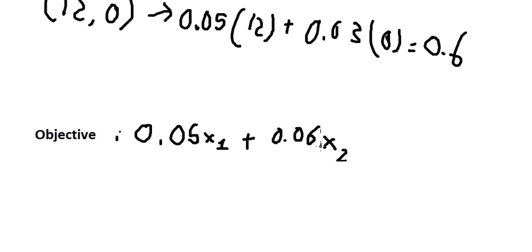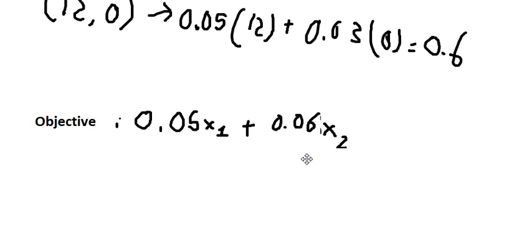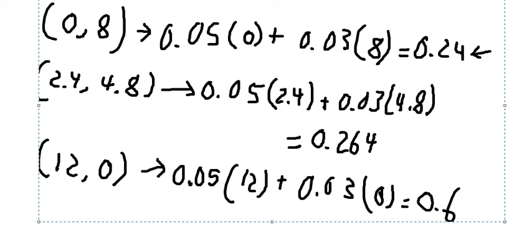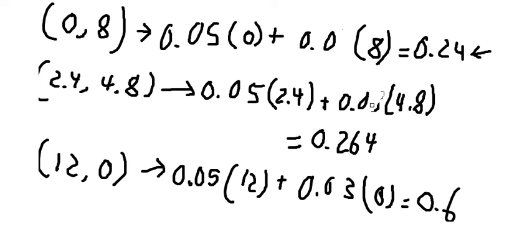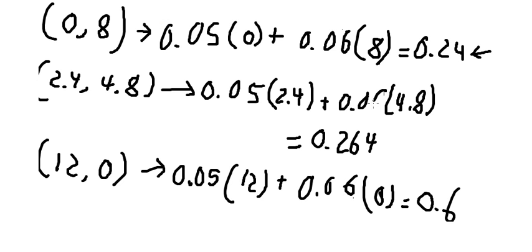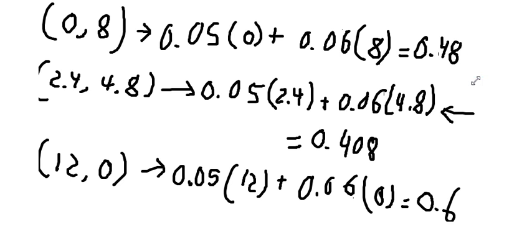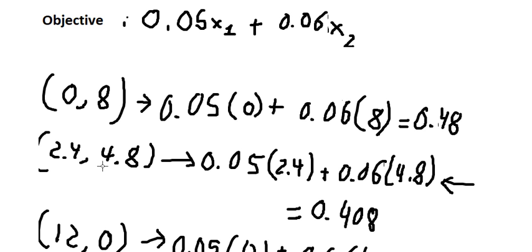Now for the next part — if the price increases from 0.3 to 0.6, what will happen? We use the same technique but just change the value in the calculation. After recalculating with the new price, we get 48 for one point and 408 for another. We need to select the minimum, so the answer is still s1 equals 2.4 and s2 equals 4.8.